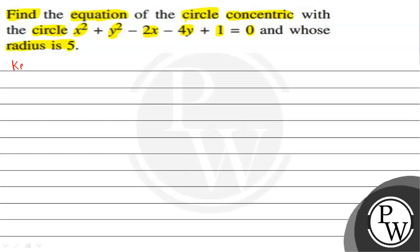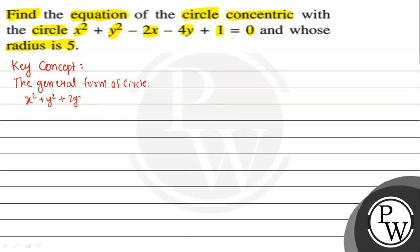The key concept to solve this question is the general form of a circle, given by x² + y² + 2gx + 2fy + c = 0.